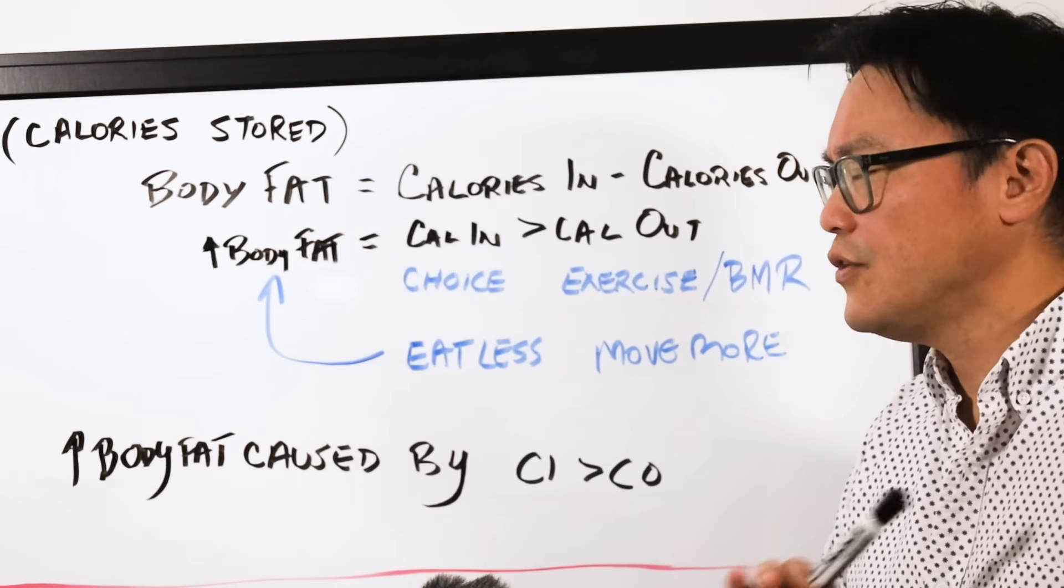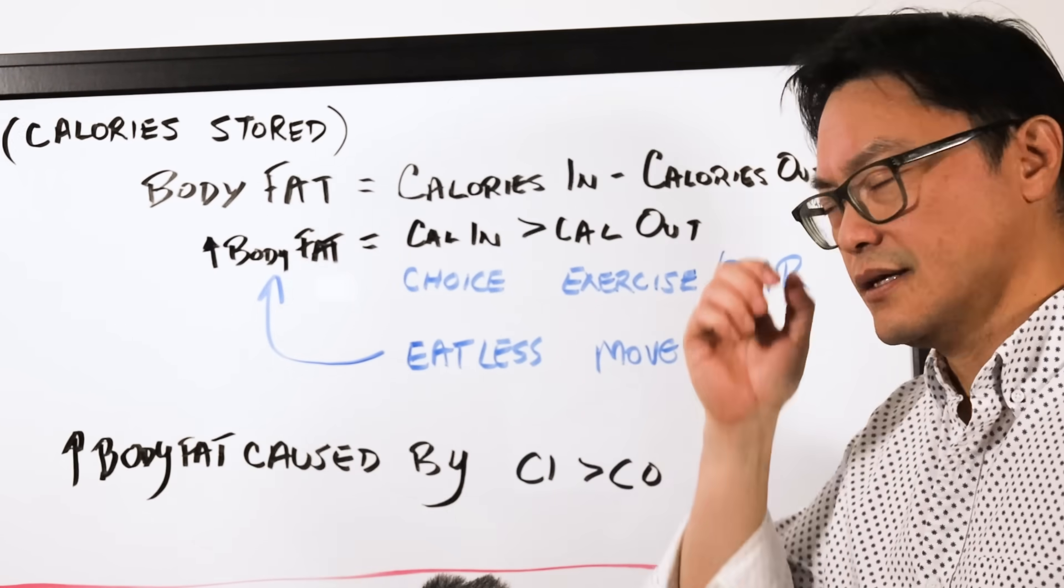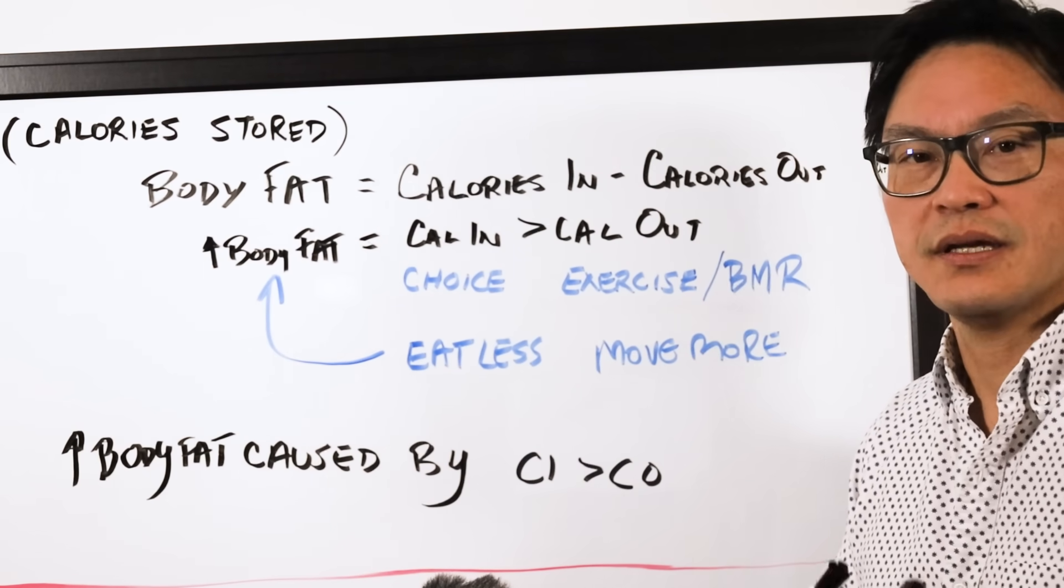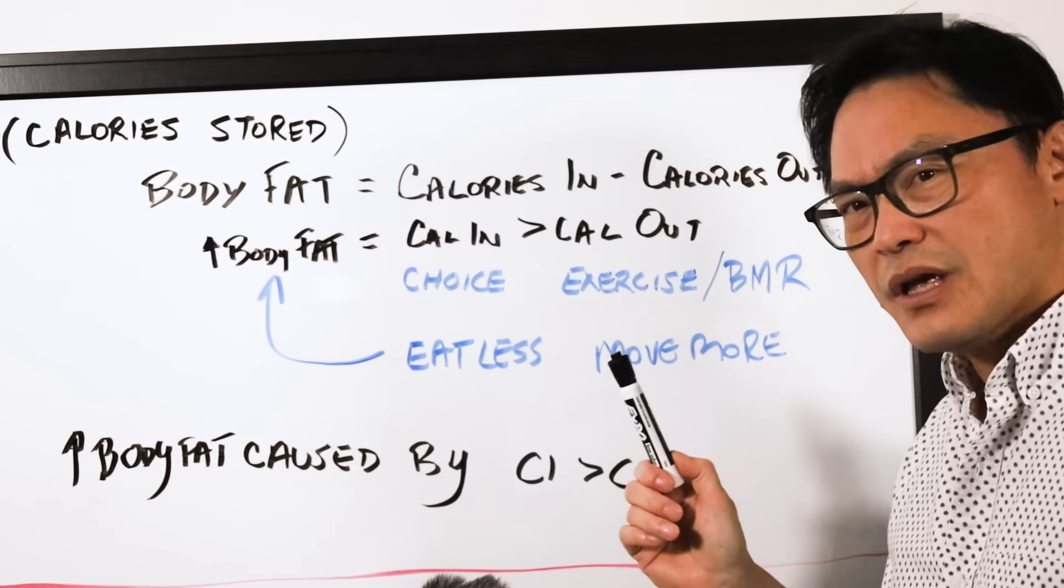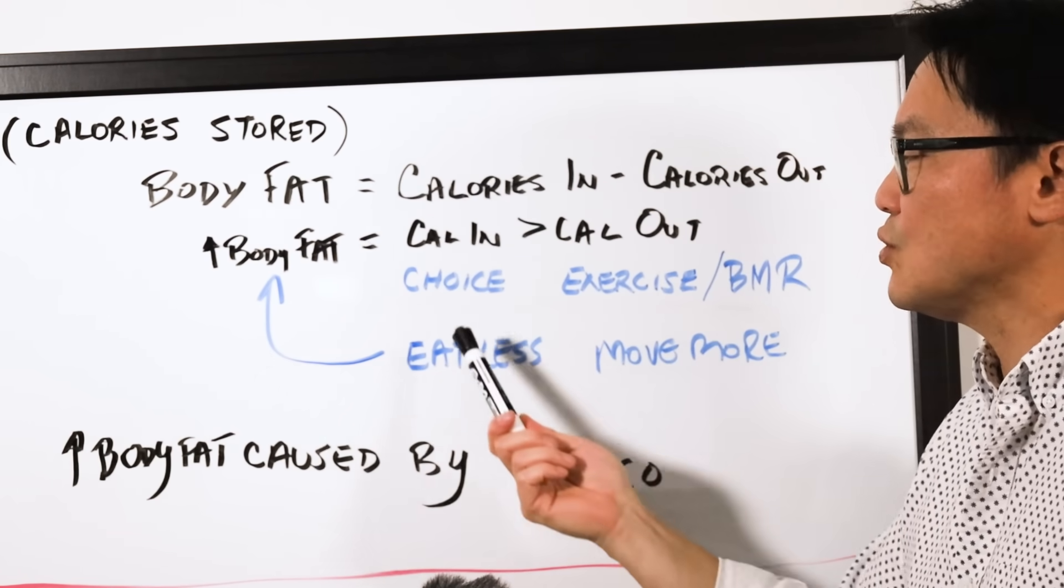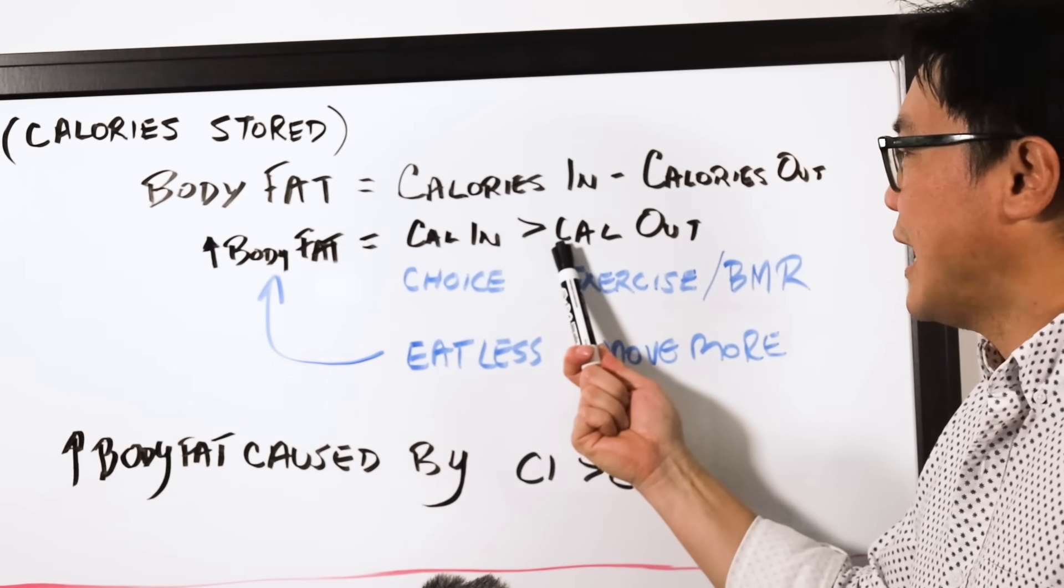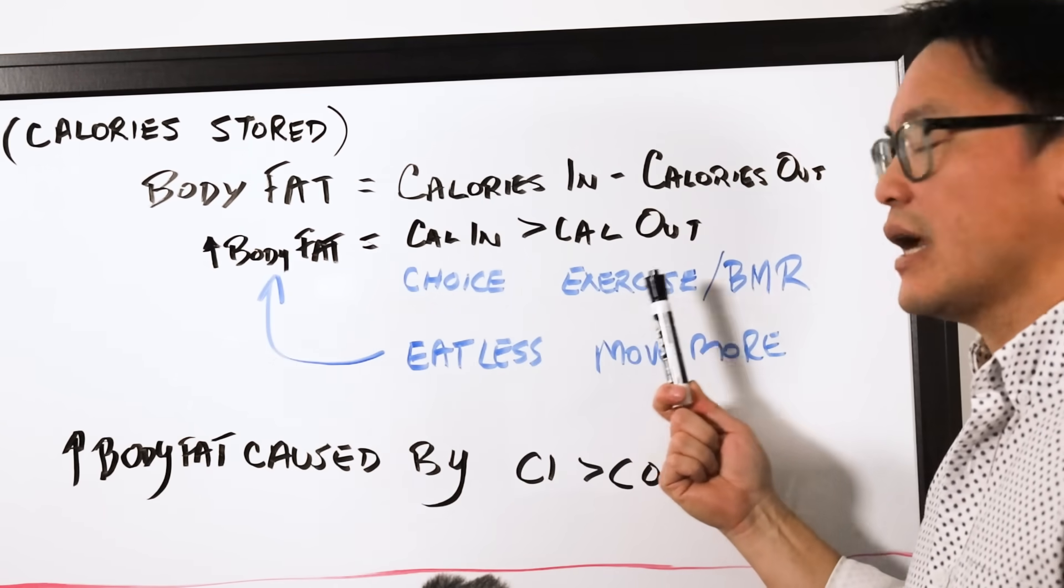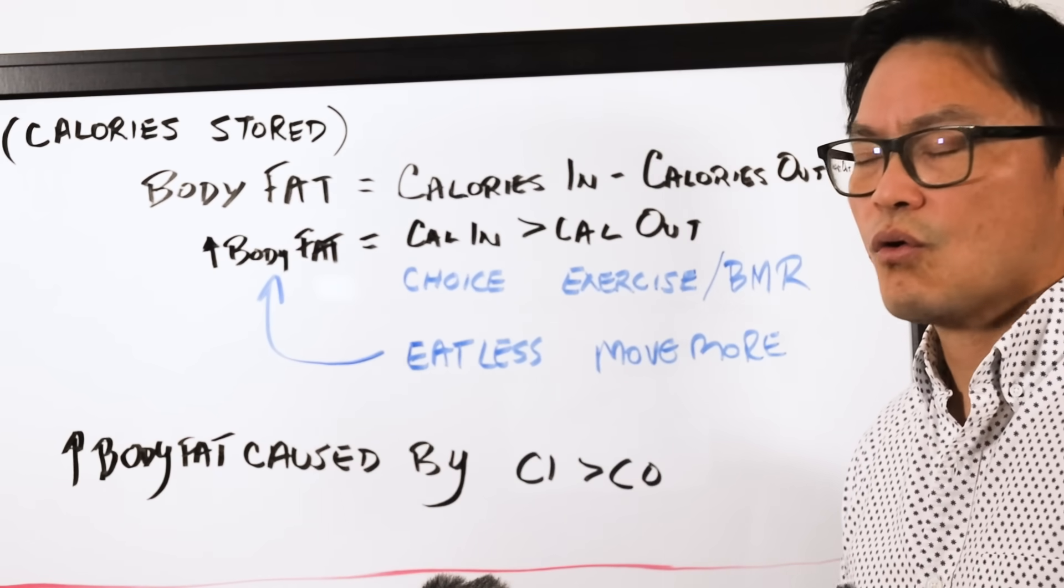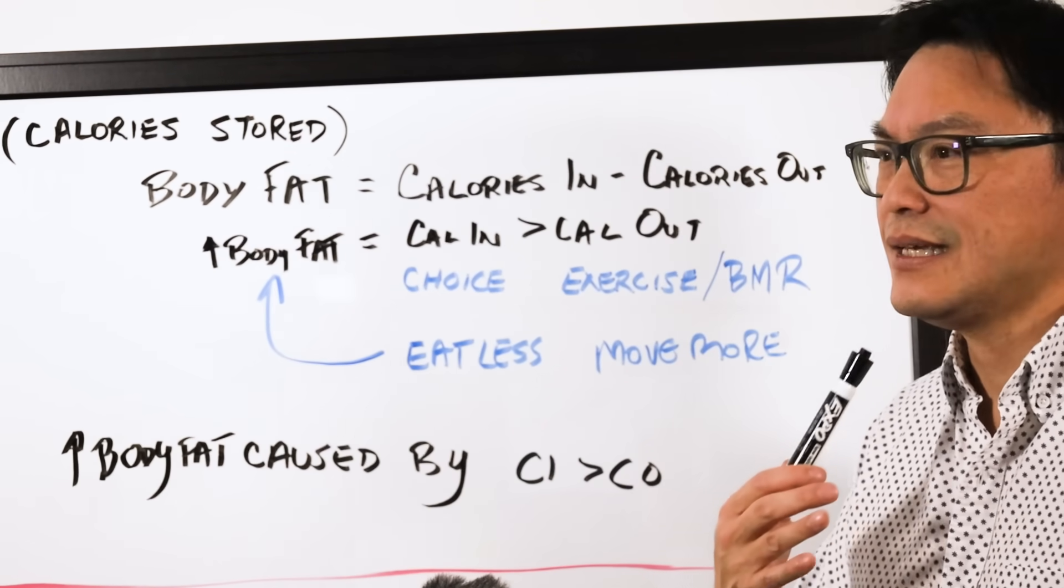However, it doesn't mean what most people think it means. This is how most of us think about it. The calories in is what we eat, so that's our personal choice. The calories out is both exercise and basal metabolic rate, which is the amount of calories your organs need to generate body heat for your liver, your lungs.